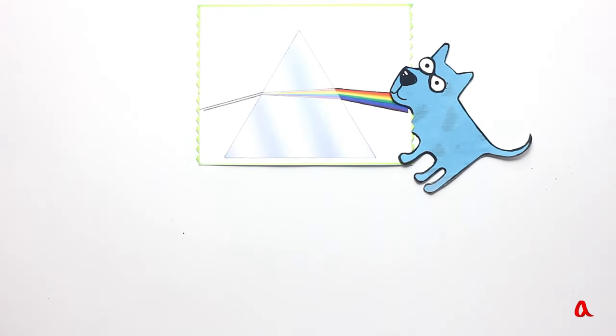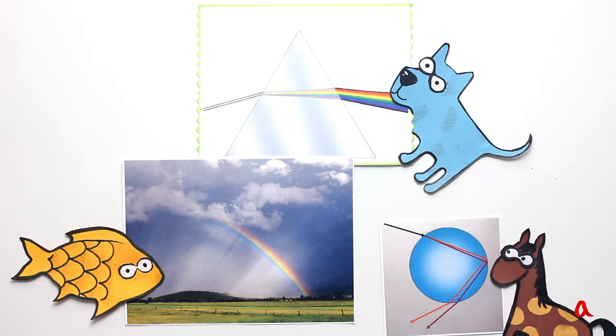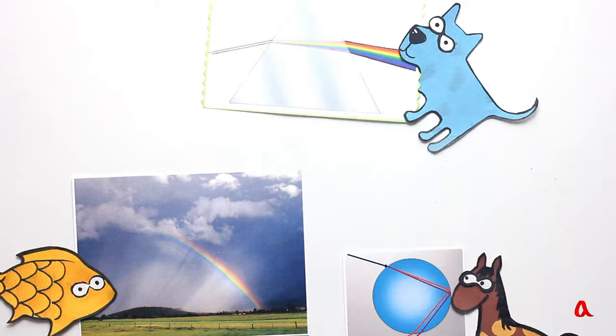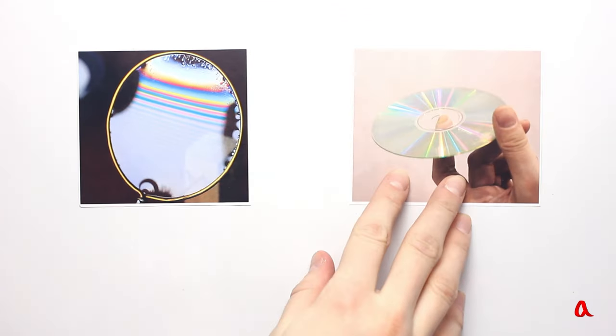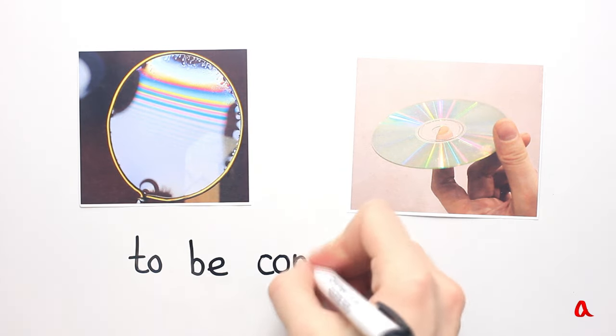We have learned how a prism separates white light into individual colors. Small drops of water work like prisms in a real rainbow. Next time we're going to talk about the emergence of rainbow colors in a thin film or when light is reflected from a CD.